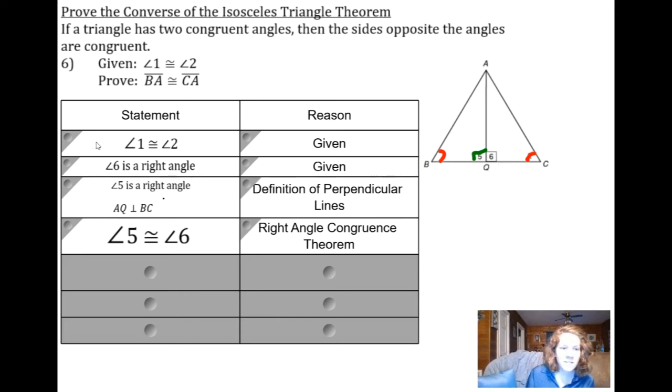Thinking about what I've got so far, I have an angle right here. I have another angle right here. I need a side because we know angle angle angle is not a way to prove triangles are congruent. So I've got to find a side.